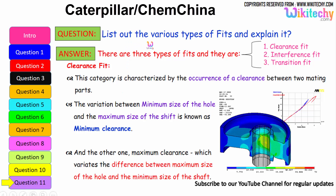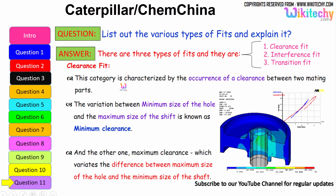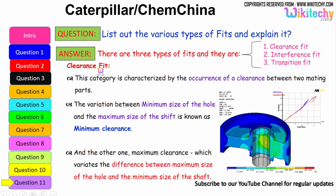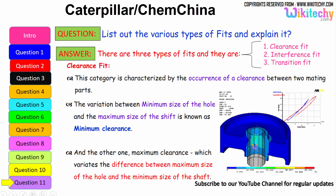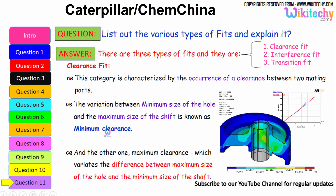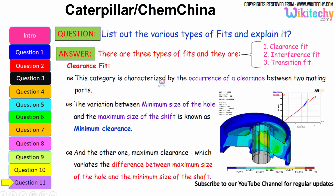Let us see the final question: list the various types of fits and explain them. There are three types of fits available. The first is clearance fit, the second is interference fit, and the third is transition fit. Clearance fit is characterized by the occurrence of clearance between two mating parts. The difference between the minimum size of the hole and the maximum size of the shaft is known as minimum clearance, while maximum clearance is the difference between the maximum size of the hole and the minimum size of the shaft.